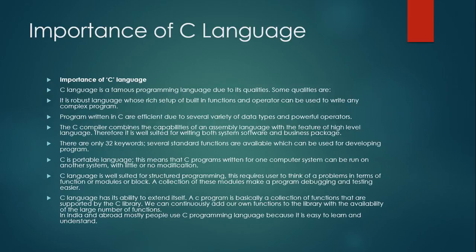You can develop system software and business packages with the help of C language. System software is basically used to control or run your system, like operating systems and drivers. Application software is software that works for the user, like Word, Excel, and PowerPoint.